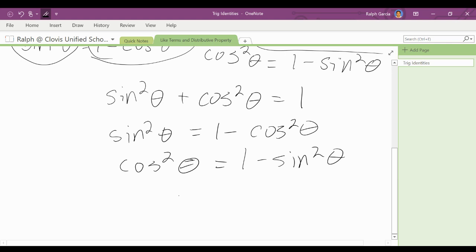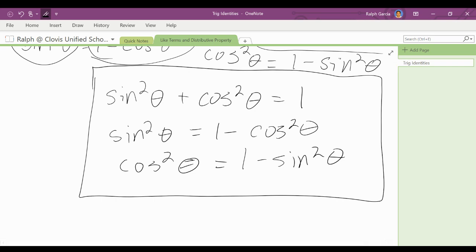So we need to have all of those, we need to memorize them. You will use them so much that it won't be too hard to do, but you've got to remember that is our Pythagorean identity.